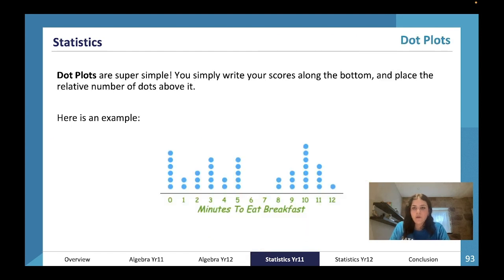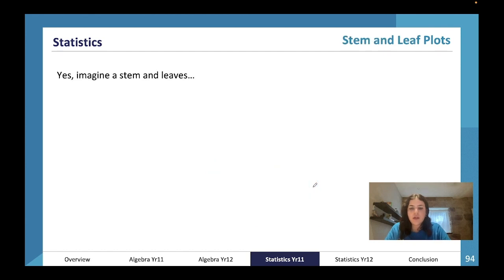Okay, let's have a look at dot plots. Dot plots are super simple—you're just writing your scores along the bottom and placing the relative number of dots above it. This is an example. In this example it means that seven people take 10 minutes to eat breakfast, one person takes 12 minutes, two people take eight minutes, no one takes six or seven minutes, and so forth.